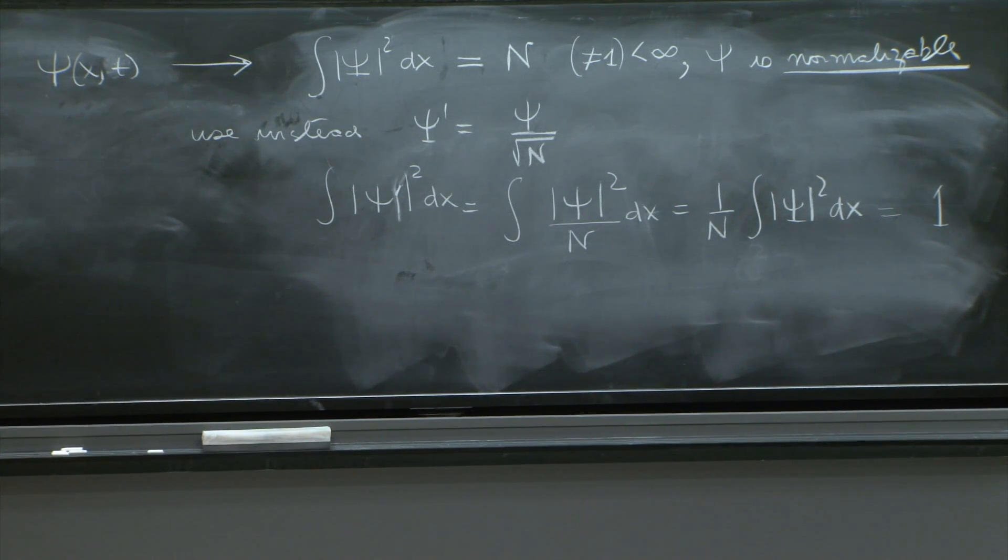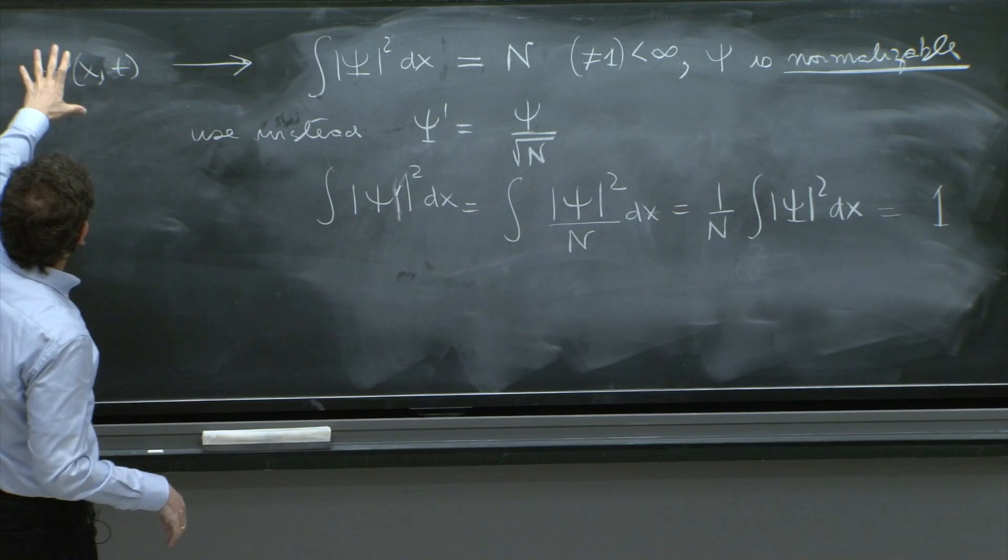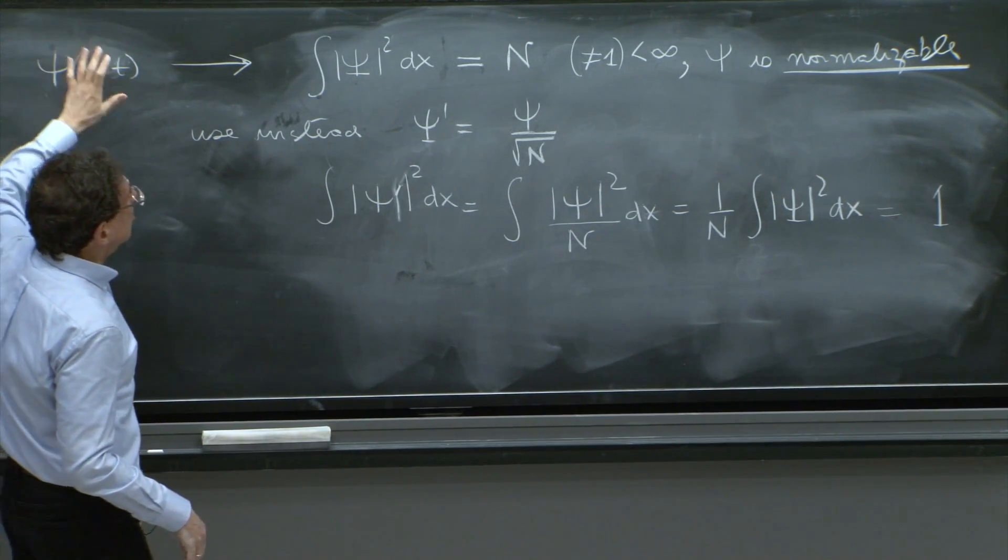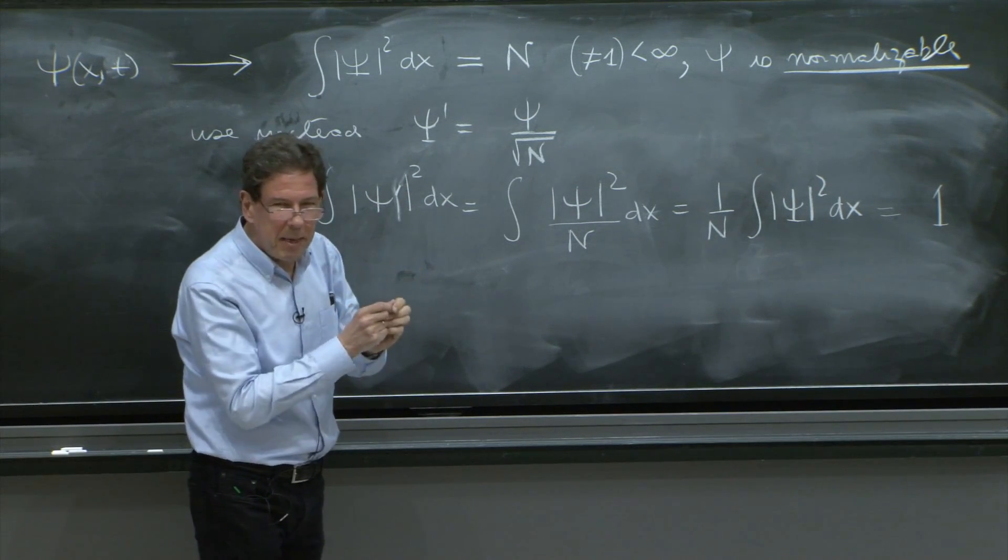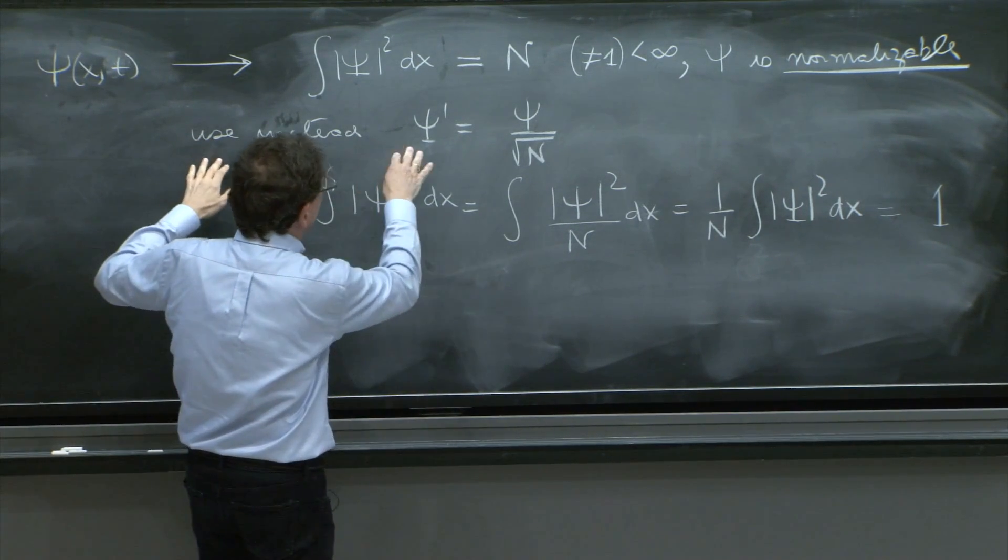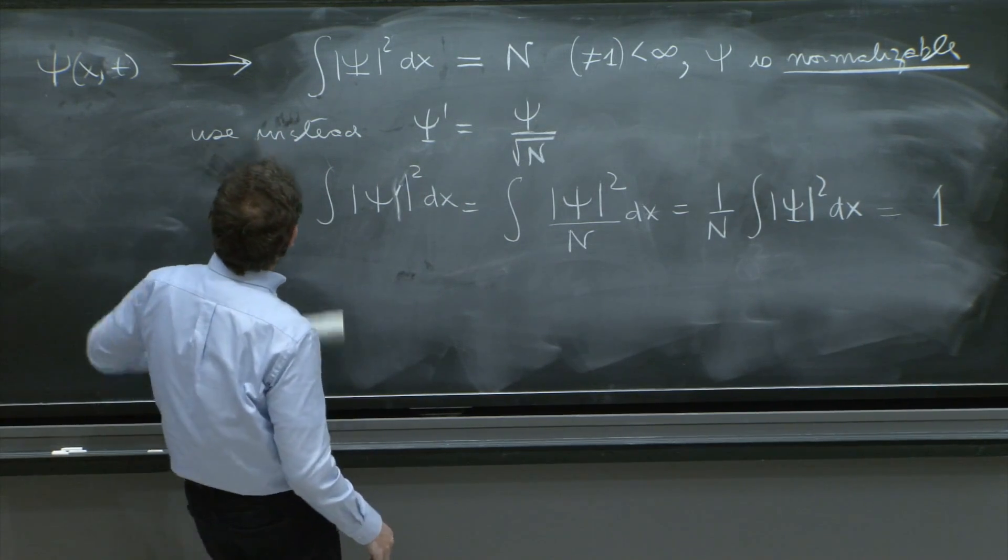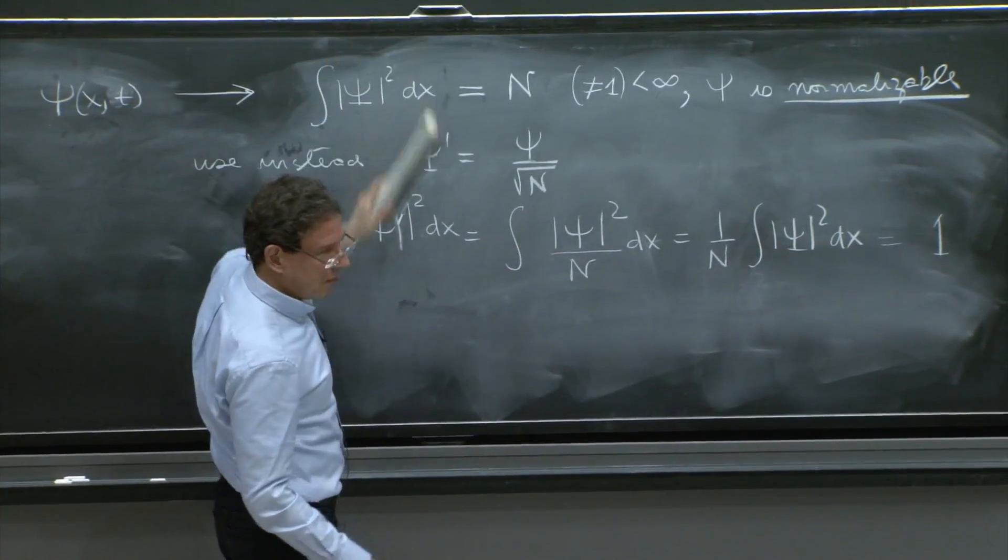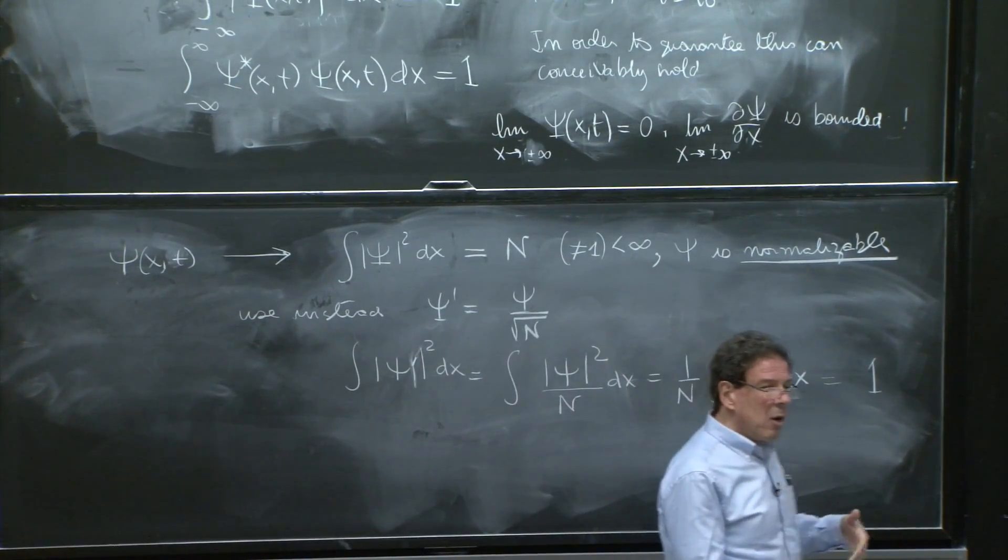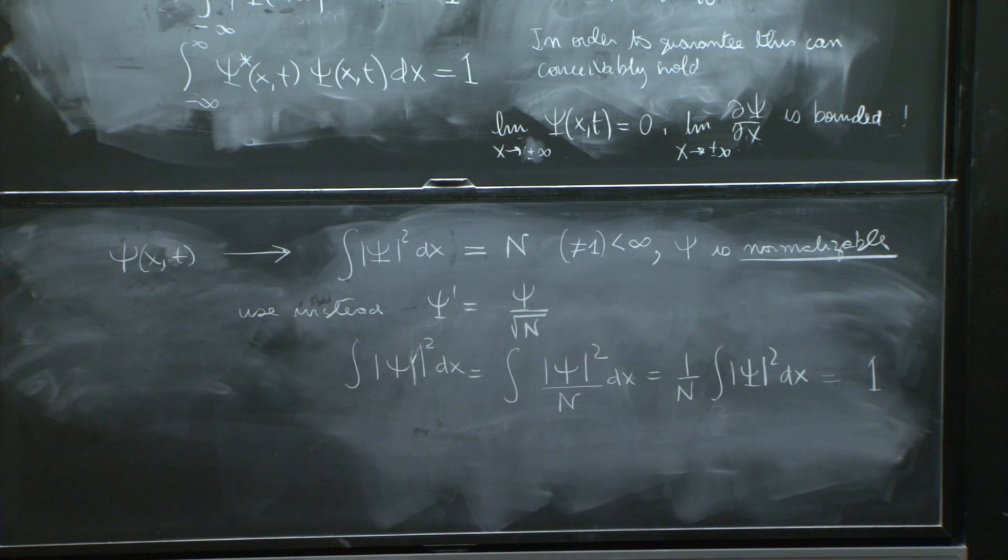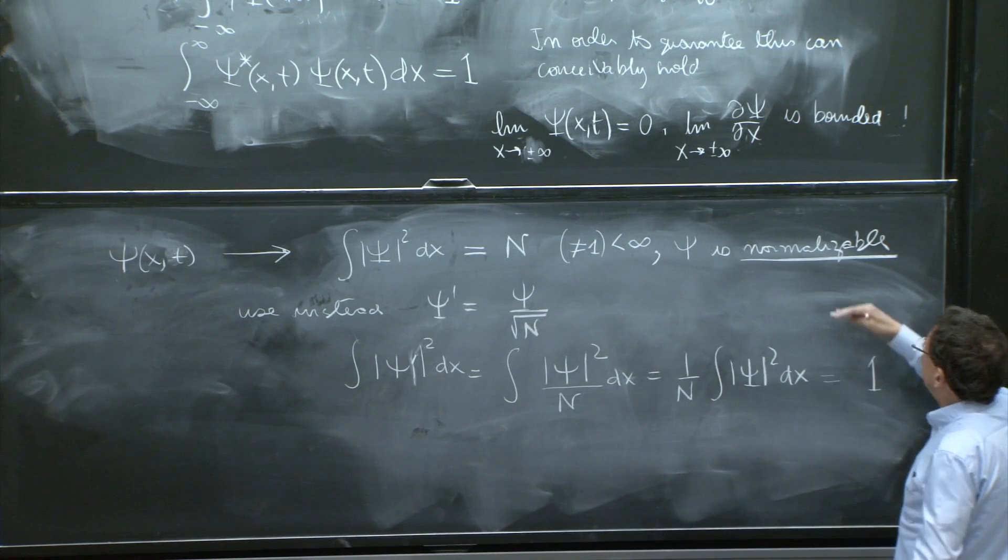Which is the original wave function divided by a number. So the idea is that in some sense, you can delay all of this. You can always work with wave functions that are normalizable, but only when you're going to calculate your probabilities, you can take the trouble to actually normalize them. And those are the ones you use in these formulas.